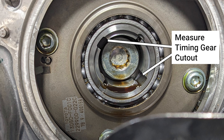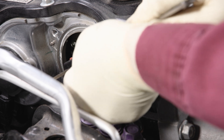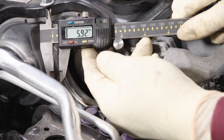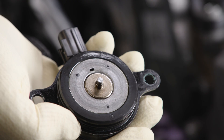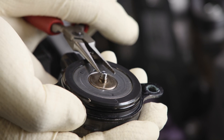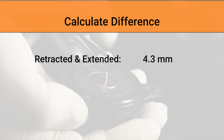Then measure the inside of the timing gear cutout. With both measurements, calculate the clearance. The maximum clearance is 0.7 mm. If the clearance is over the maximum value, replace the VVTIE EDU assembly or camshaft gear, depending on which measurement is out of spec. Next, remove the VVTI solenoid. The mechanical inspection of the solenoid can be done by checking the movement of the plunger. The difference between the retracted position and the extended should be 4.3 mm or more.